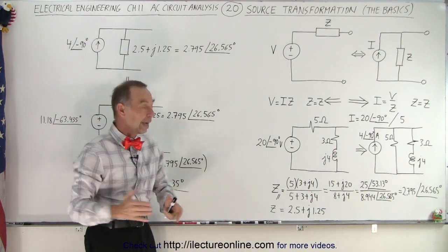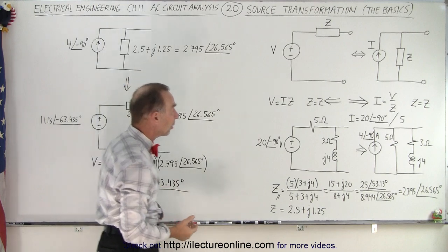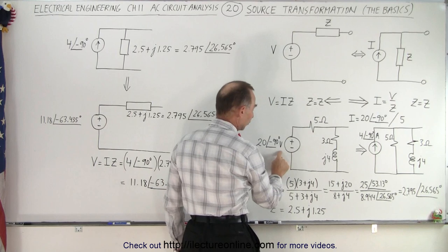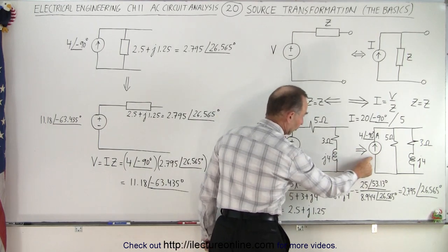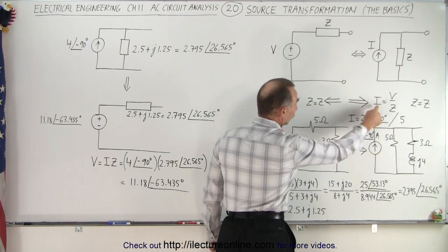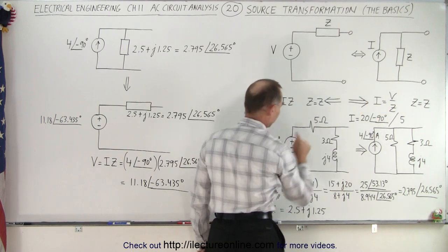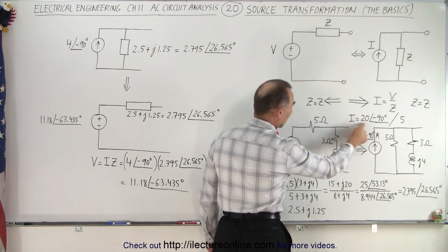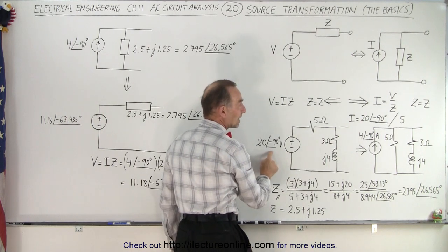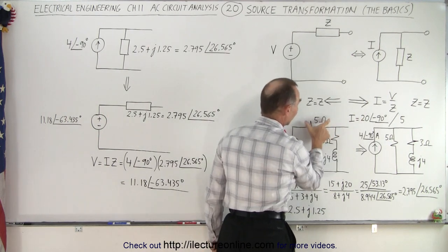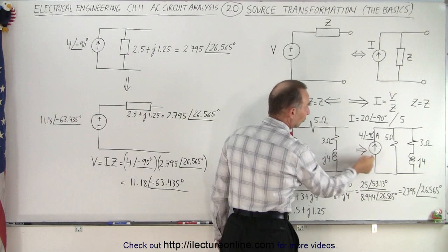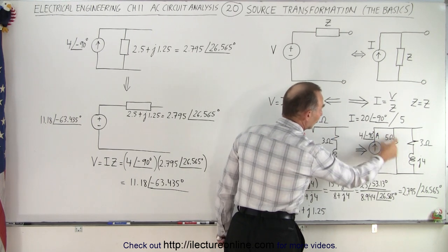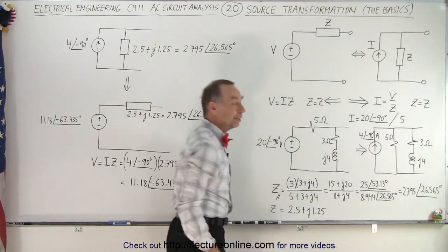Let me show you how that's done. First, we're going to take the circuit over here and convert it, which means we have to go from a voltage source to a current source. The current source equals the voltage source divided by the impedance. So in this case, it'll be 20 with a phase angle of minus 90 divided by 5, because that's what the resistance is here. So we end up with this current source and the same impedance now in parallel.